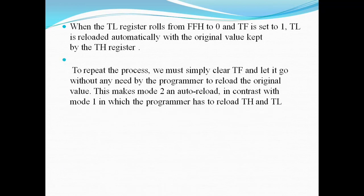To repeat this process, we must simply clear the TF for the next iteration. In this case, as it is auto-reload mode, the programmer need not reload the original values again. This makes mode 2 auto-reload, in contrast with mode 1 in which the programmer has to reload the values in TH and TL registers again. Remember that in mode 2, initially we set the value in TH as well as in TL register, and then from that set value it starts incrementing and reaches up to FFH.